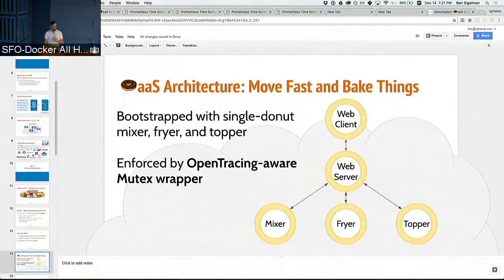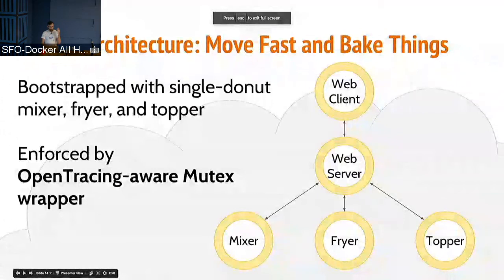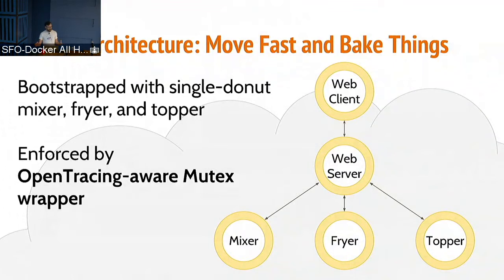Let's talk about the architecture. It's a 'move fast and bake things' architecture. We've got a web client — what you have on your phone — talking to a microservice, which in turn talks to three microservices in serial. To make a donut you have to mix the batter, fry the batter, and top it. These are done in serial. In order to move fast, I bought a single-threaded fryer, so we can only fry one donut at a time. That serialization is enforced by a mutex — and although it's in Go, I know it should be a channel, but this is a mutex that is OpenTracing-aware.